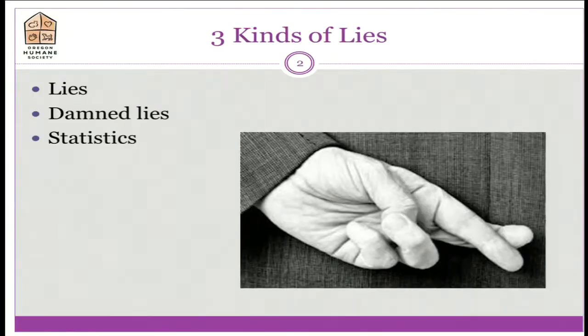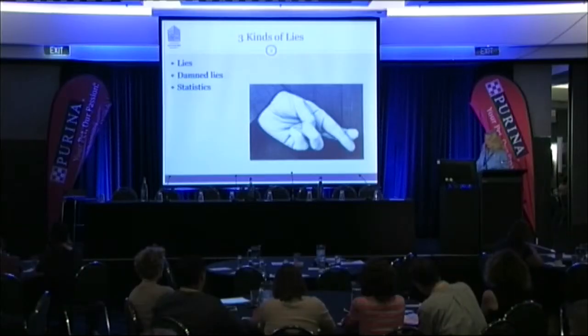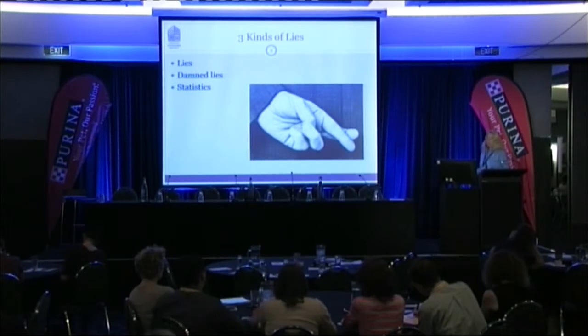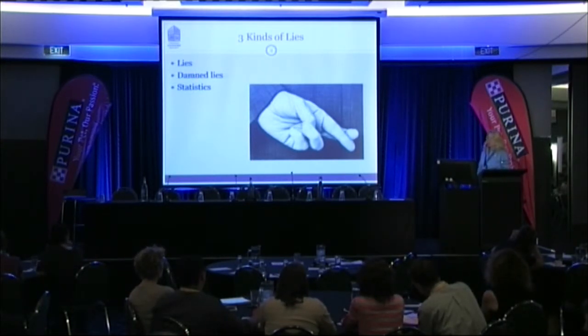We all know there's three kinds of lies: lies, damned lies, and statistics. Statistics are sometimes used to prove a point, sometimes used to beat you over the head with them. We want to figure out a way to use numbers and statistics and measurement to improve our situation and our ability to care for animals.